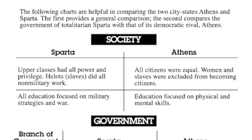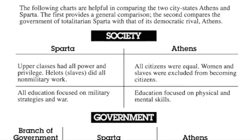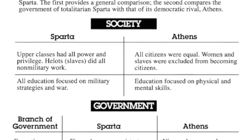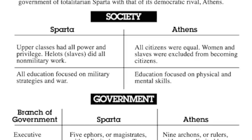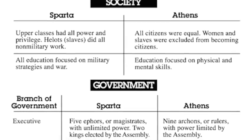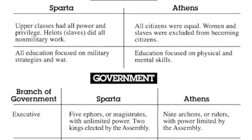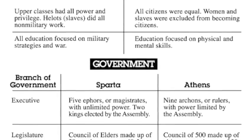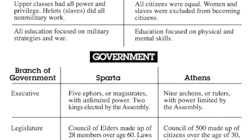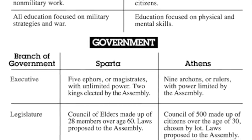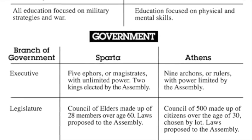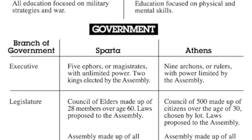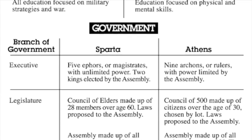A chart is located in your Padlet readings. You need to be familiar with the makeup of the Spartan and Athenian governments. Go over the chart — it's in your reading under the Greek Padlet — and just take a look at that document.